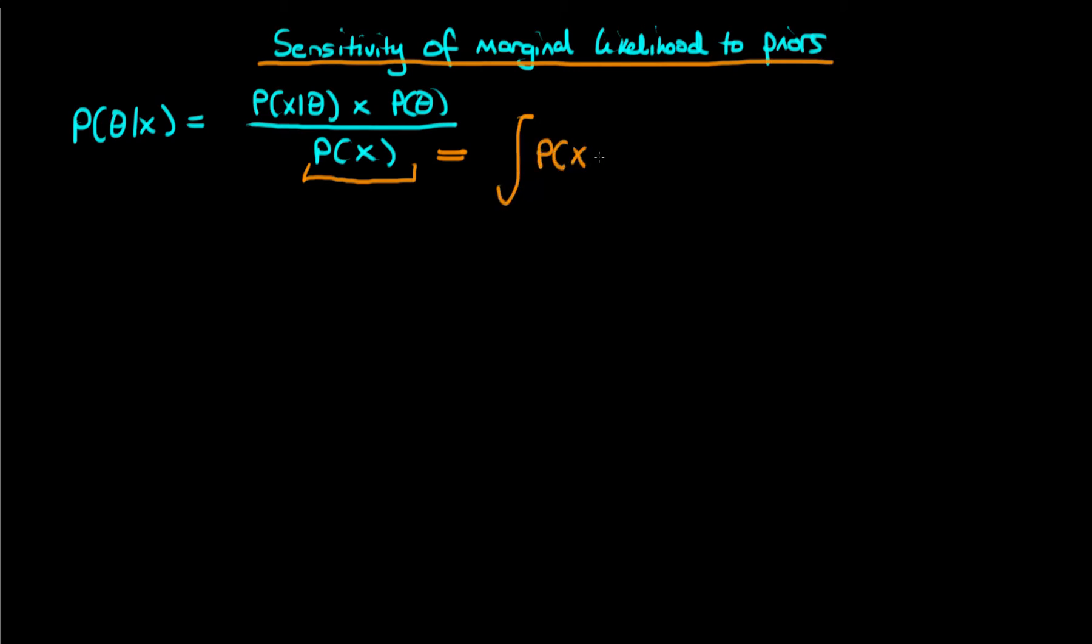Which is the integral of the likelihood, p of x given theta, times p of theta integrated with respect to theta. And remember here that theta is usually a vector, meaning that this is actually a multidimensional integral here.